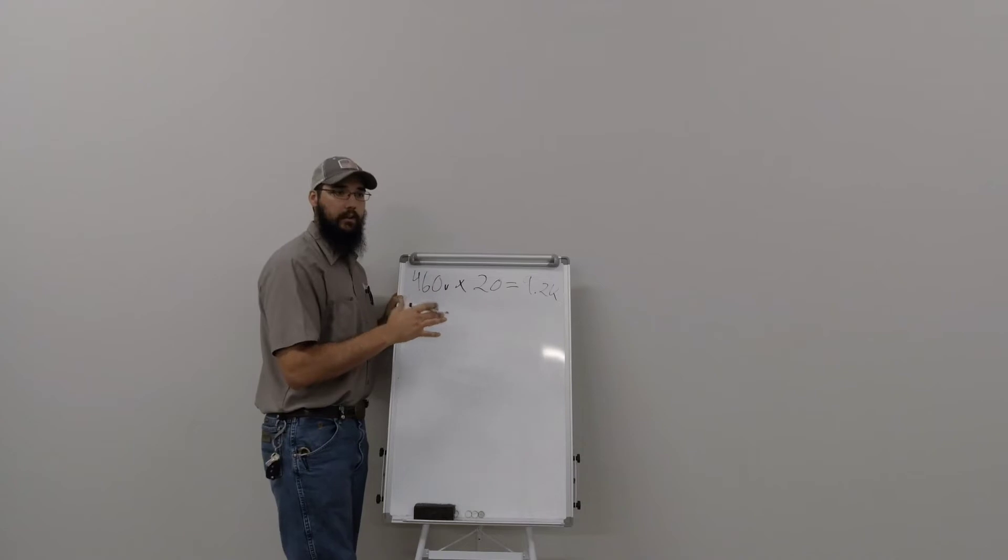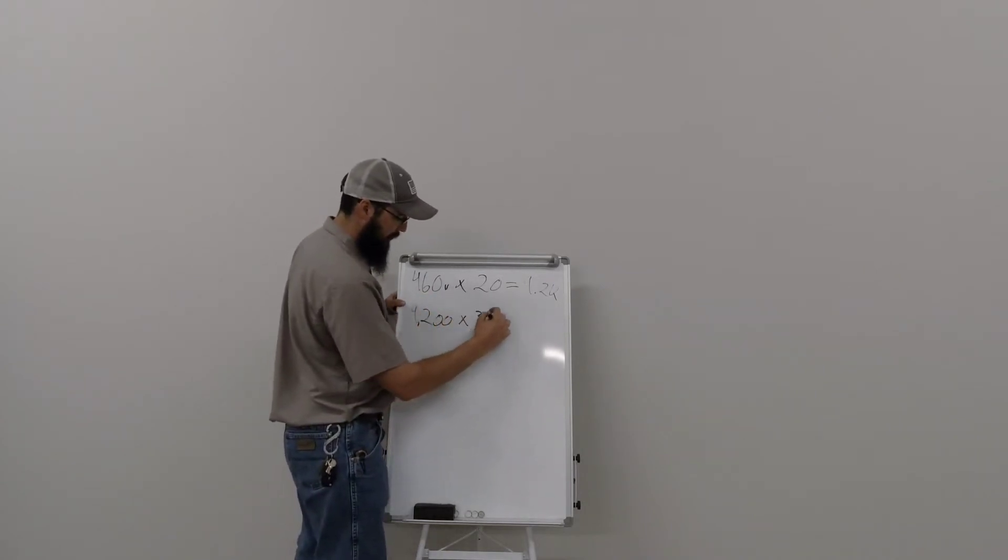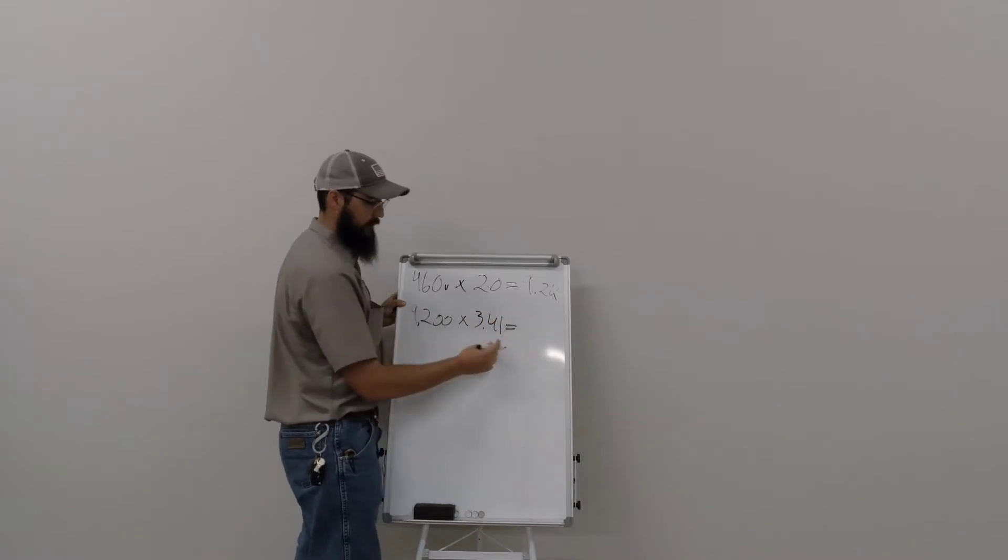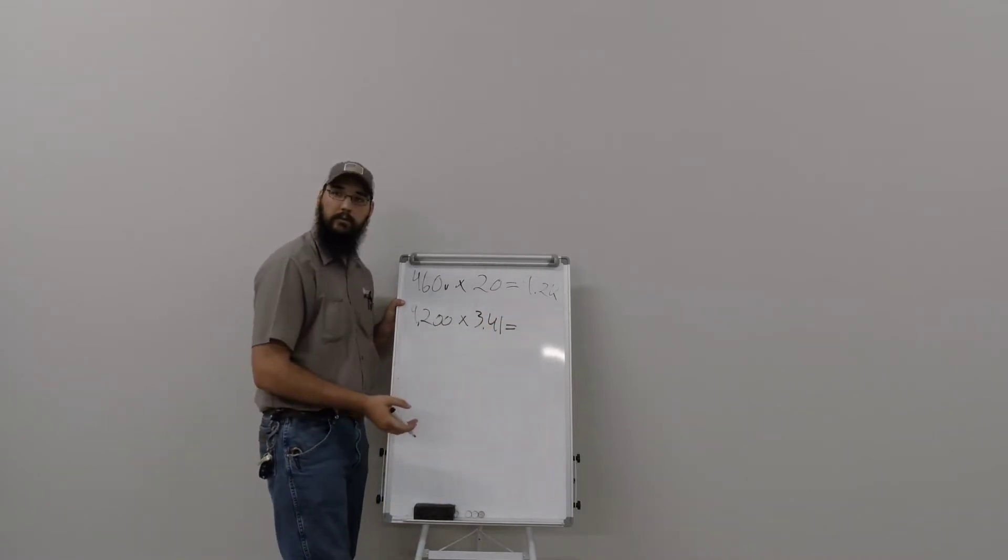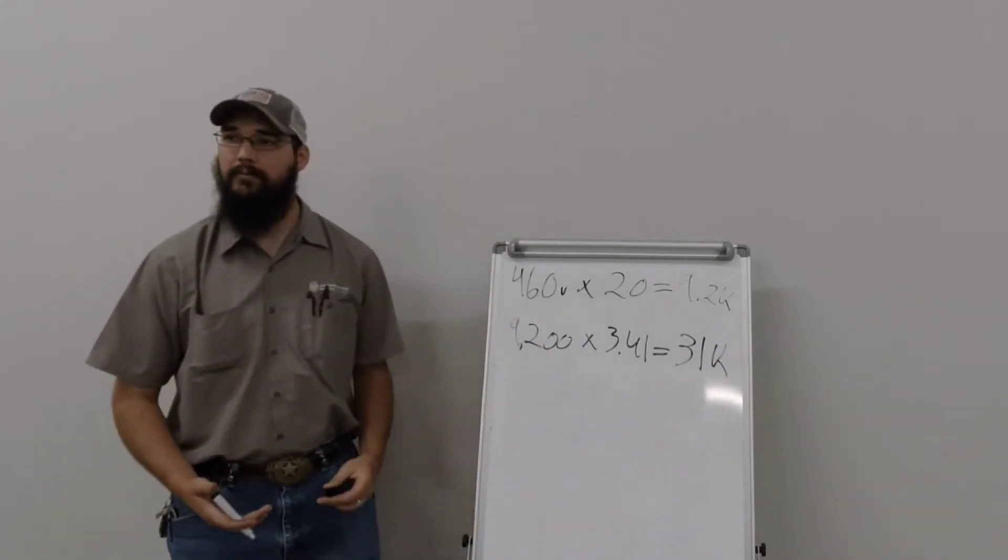That's your watts. So we have 9200 watts. So 9200 times 3.41 watts conversion gives you how many BTUs? So 31,000 BTUs. So 31,000 BTUs at the end of the day. Right?